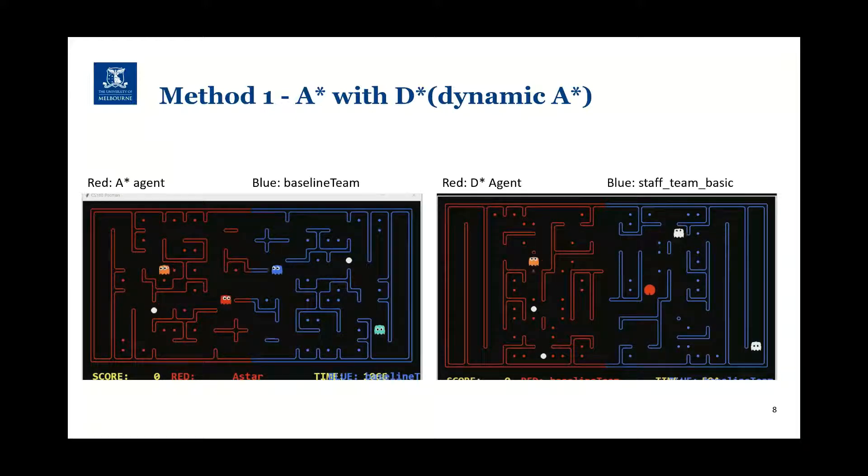So we designed to develop the second version of this project, which uses dynamic A star, also called D star. D star is more useful than A star in this project, because D star search algorithm is good at replanning when obstacles are detected in real time.